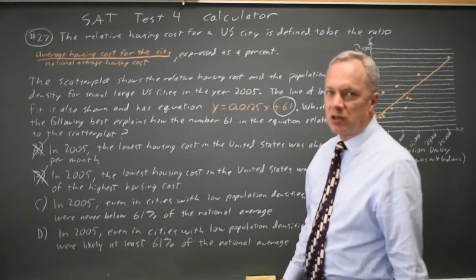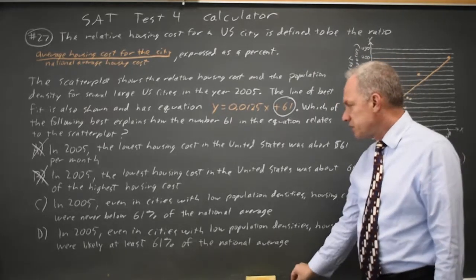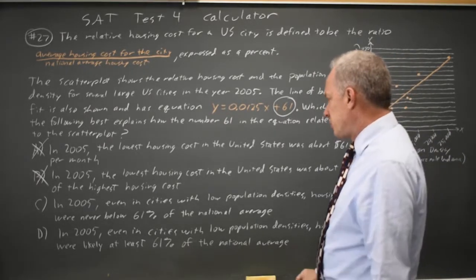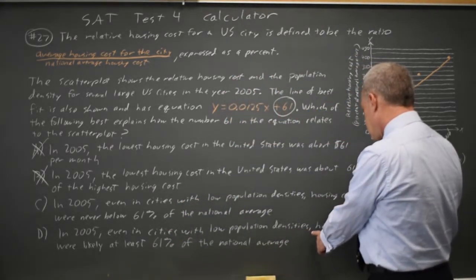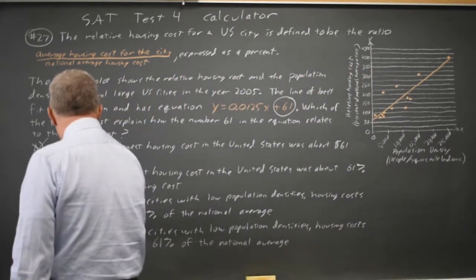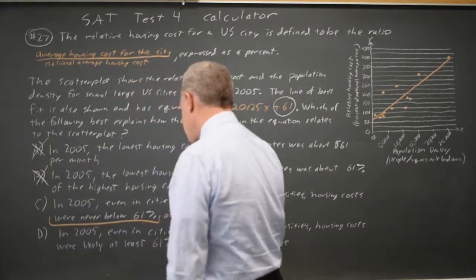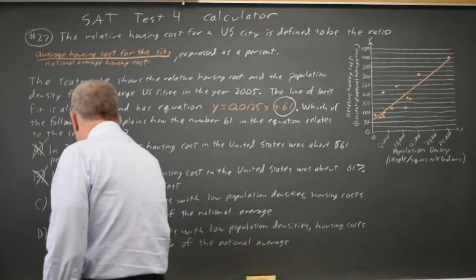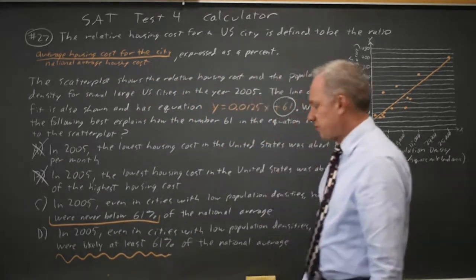Choices C and D are almost identical wording, so it's important to read the words where they differ. In 2005, even in cities with low population densities, housing costs in choice C were never below 61 percent of the national average, and in choice D were likely at least 61 percent of the national average.